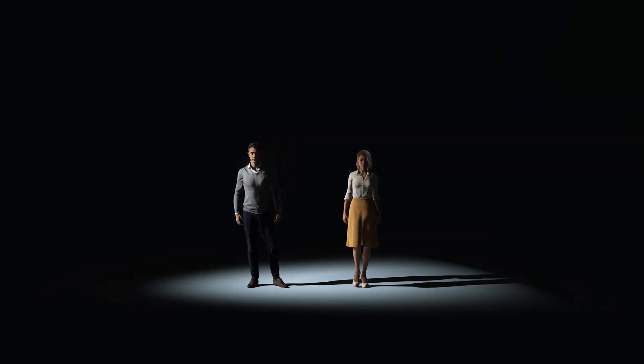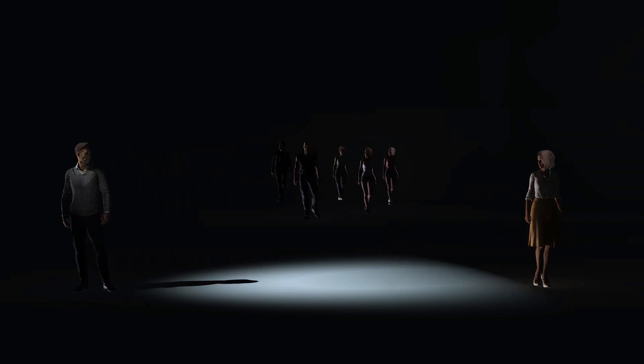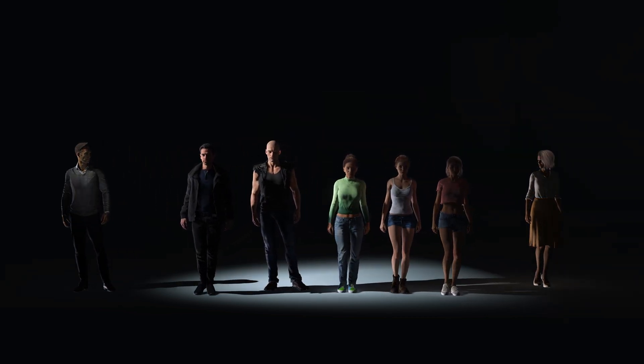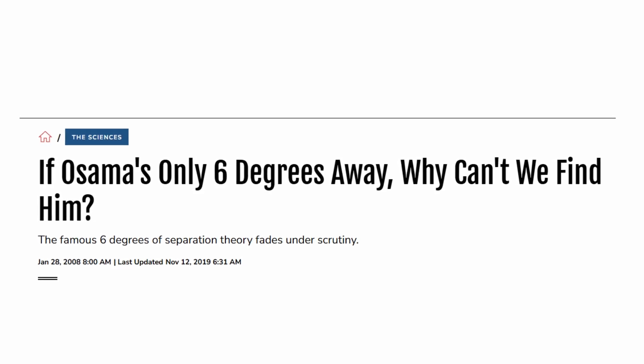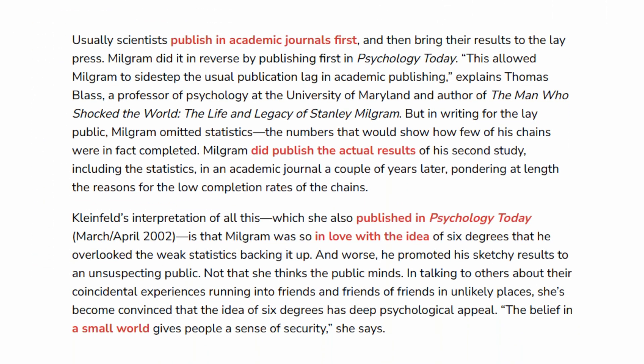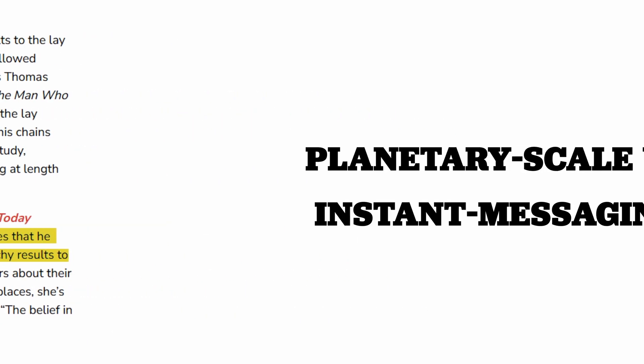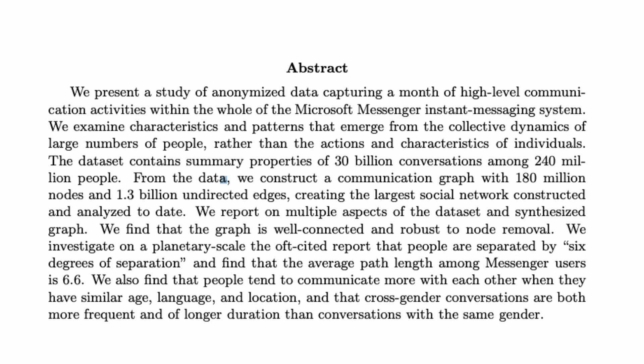Using his experimental data, Milgram concluded that any two individuals were separated by a median of five intermediate acquaintances — hence the six degrees of separation. In Elizabeth de Vita Rebu's strangely titled piece, 'If Sam Is Only Six Degrees Away, Why Can't We Find Him?', the author, like many other scientists, claimed that Milgram's theory falls under scrutiny and that he faked his data. Except it doesn't. A 2008 research paper published by Microsoft, just two months after Elizabeth's piece, calculated the average chain of contacts between users of Microsoft's .NET Messenger Service to be 6.6 — not far off from the results Milgram himself calculated 45 years prior.